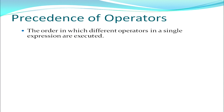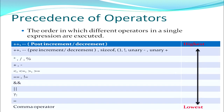Now if we use multiple operators in a single expression, what is the order in which different operators will be executed? The table shows the highest to lowest precedence. In maths you have BODMAS; in C++ programming you have precedence rules that must be followed. You have to be very careful while evaluating an expression that these precedence rules are applied correctly.